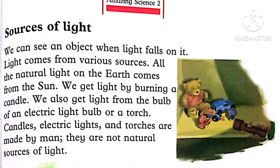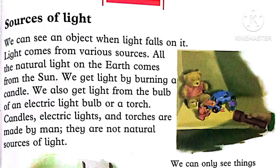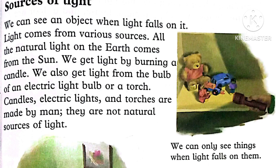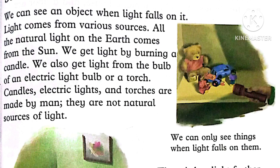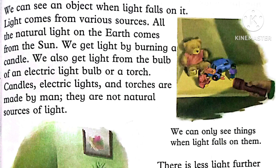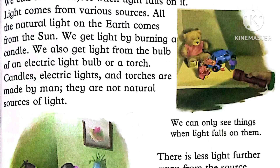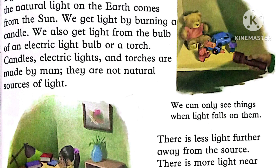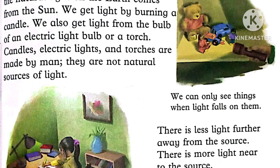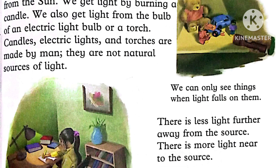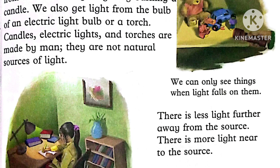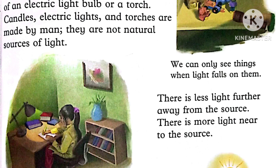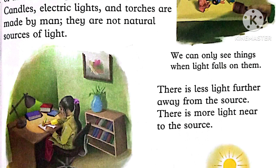Light comes from the sun. We get light by burning a candle. We also get light from an electric light bulb, and we can use a torch. Candles, electric lights, and torches are made by men — they are not natural sources of light. We can only see things when light falls on them.